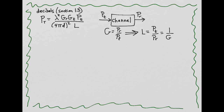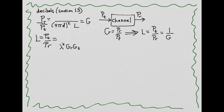Going back to our equation for free space path loss, we could move PT from the right-hand side over to the left-hand side, and then we could have the ratio of PR divided by PT, and in doing so, that would give us the gain G — the gain of our channel. However, it's not very natural to think of a channel in terms of a gain. I'd rather think in terms of a loss, L, L being PT over PR. And so we can figure out what the loss is just by inverting the equation above, moving what was in the numerator down to the denominator, and vice versa.